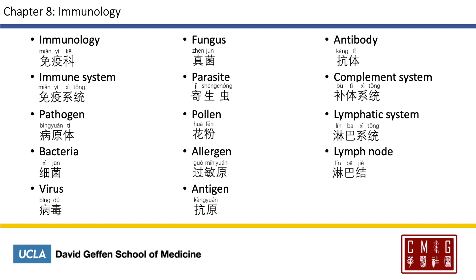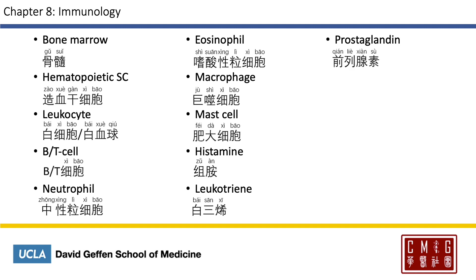Allergen is 過敏源. Antigen is 抗原. Antibody is 抗体. Complement system is 补体系統. The lymphatic system is 淋巴系統. Lymph node is 淋巴结. Bone marrow is 骨髓.